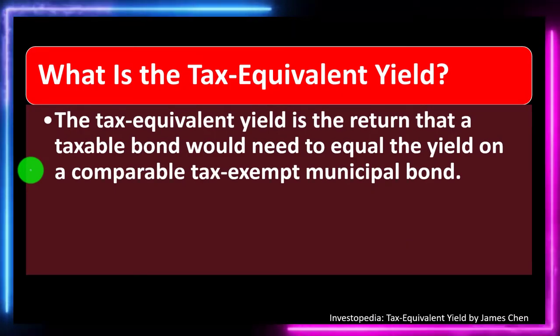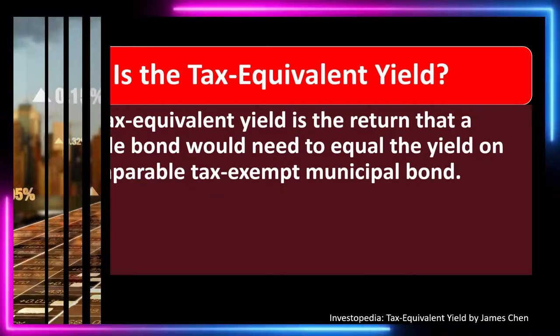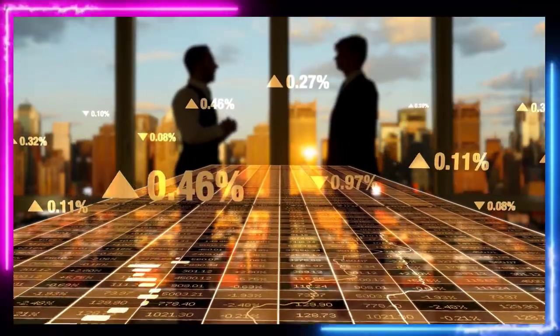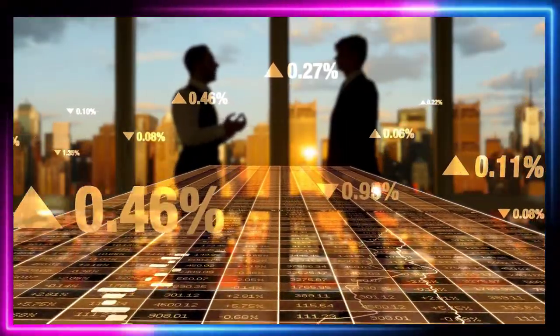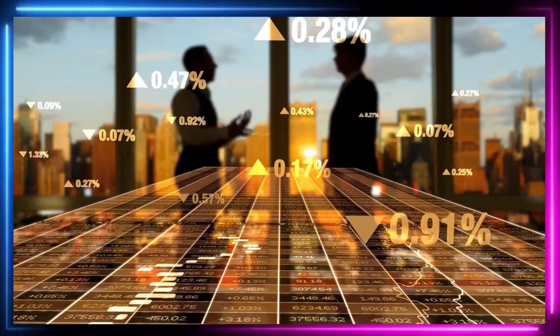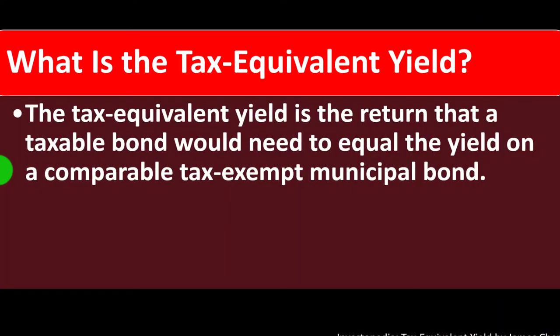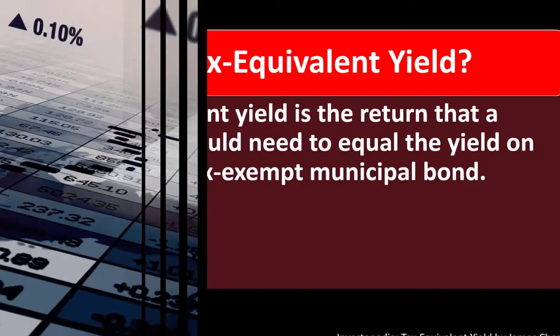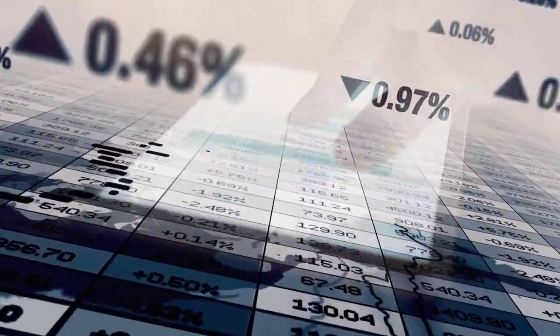In prior presentations, we've been taking a look at investment goals, investment strategies, and investment resources. Now, keeping that in mind, we're asking: what is the tax equivalent yield? The tax equivalent yield is the return that a taxable bond would need to equal the yield on a comparable tax-exempt municipal bond.